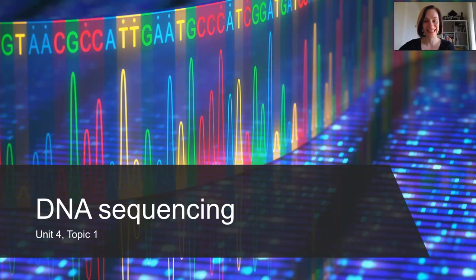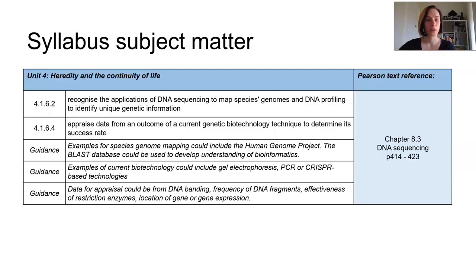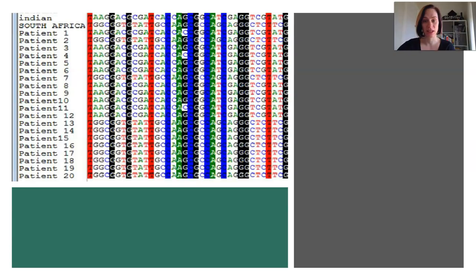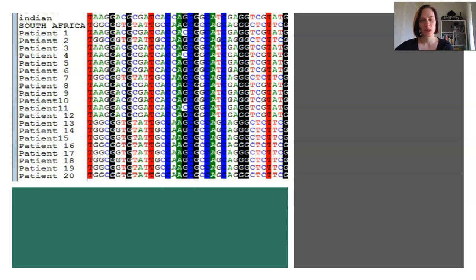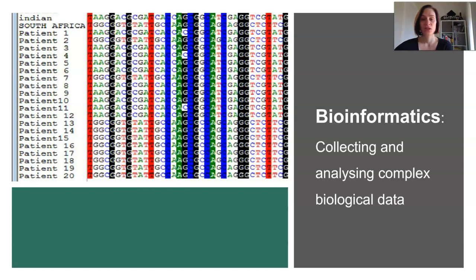In this lesson we're focusing on DNA sequencing, and we need to be able to recognize the applications of DNA sequencing to map species genomes. As scientists developed more and more tools to work with large quantities of DNA, they had to learn how to store, manage, organize and work with it. From this, bioinformatics was born — the science of collecting and analyzing complex biological data such as genetic codes.